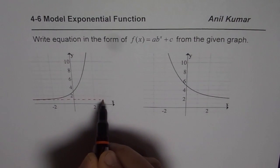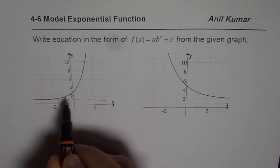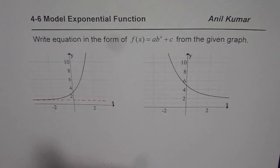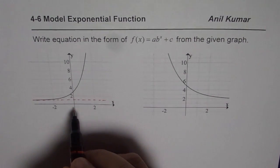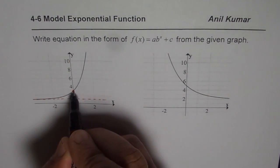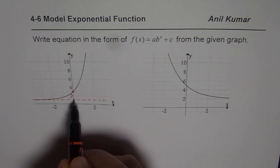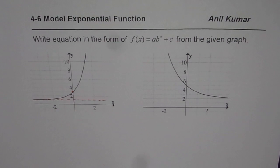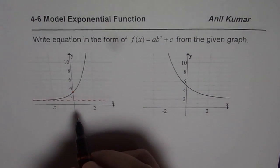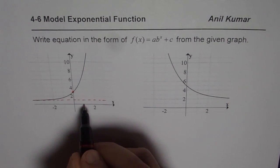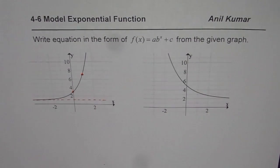In this first graph, the exponential function has a horizontal asymptote of y = 1. This translates to the value of c. To get the vertical stretch, we look for the value of the function when x = 0. So the y-intercept here is 3. The difference between the horizontal asymptote and the y-intercept gives you the value of a. To find the base b, we look for a point and substitute it to calculate b. At x = 1 we have a value of 7 — that is a good point to check.